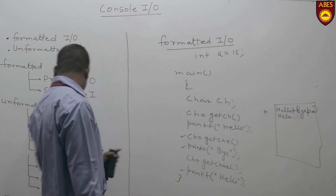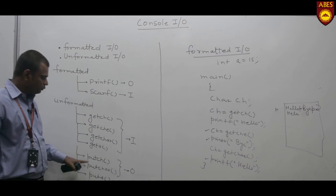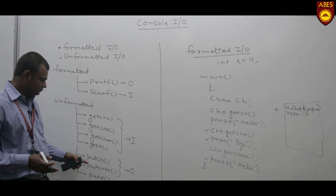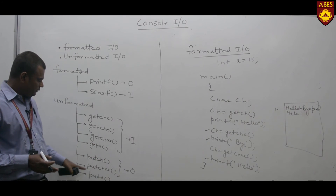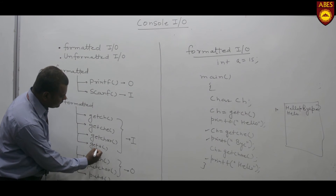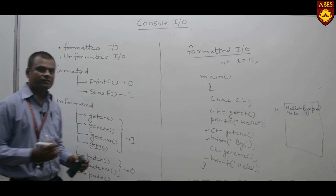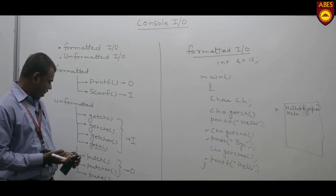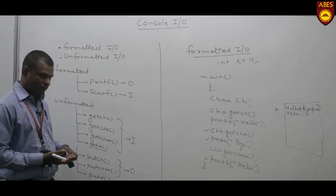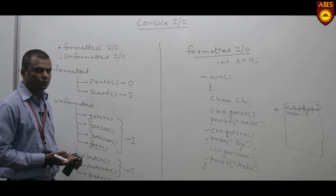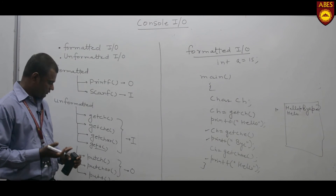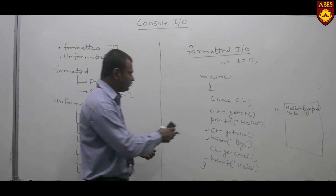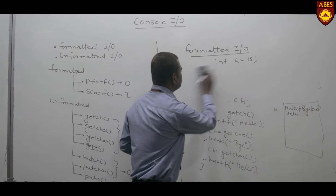In a similar way, putch and putchar are used to write a single character to the screen. The gets function is used to read a string from the console, and the puts function is used to write a string to the screen.